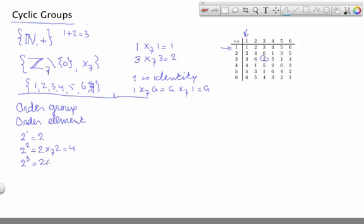2 to the power 3 means 2 times modulo 7, 2 times modulo 7, 2, which of course is 8 divided by 7, gives me a remainder 1. Therefore we say, because we know now the power of 2, 2 to the 3, which gives me an answer 1, we say that the element 2 has an order of 3.